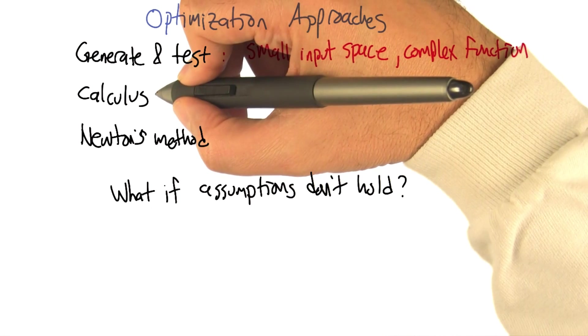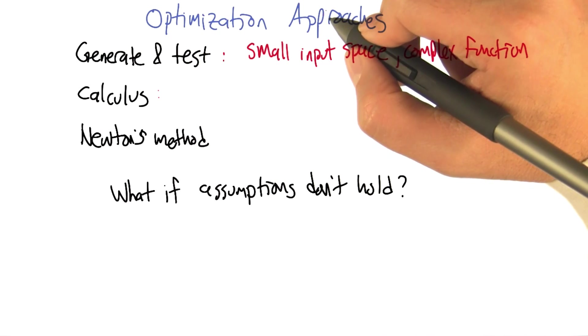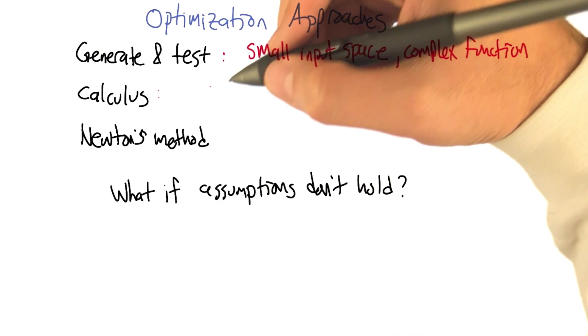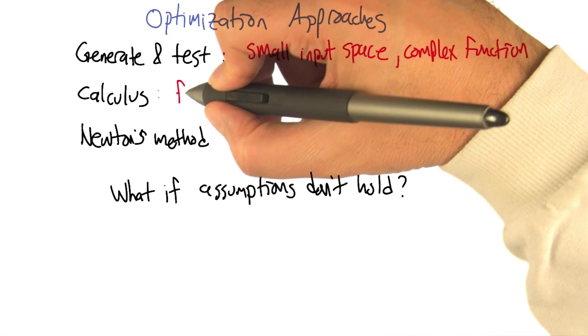All right, for things like calculus, like just solving for what the optimum is analytically, when is that a good idea and when is that not such a good idea? Well, it's a good idea when you have a function where you can do that. First off, it has to have a derivative.